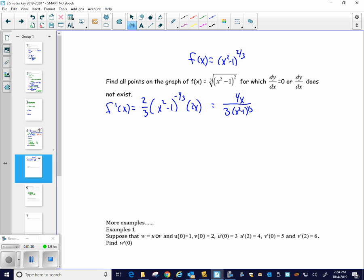So in order for this to equal zero, we know that the numerator has to equal zero. So we're going to set four x equal to zero. In order for this to be undefined, or does not exist, it's when the denominator of the derivative equals zero, because if the derivative's denominator equals zero, the derivative won't exist. So we'll set the denominator equal to zero. So this part is for dy/dx equals zero. This part is for dy/dx does not exist.